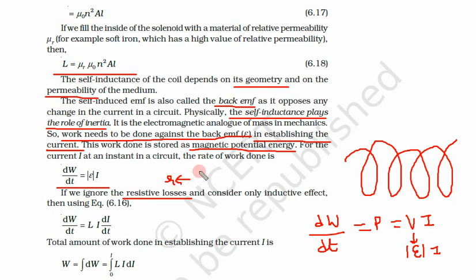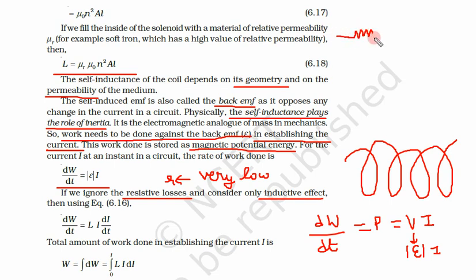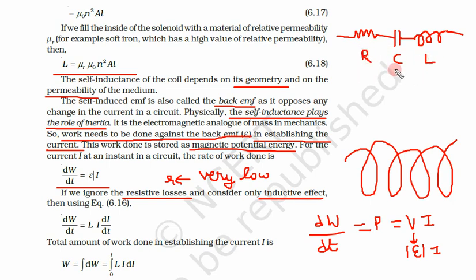Resistance R is very low, and we consider only the inductive effect. In any electrical circuit, we have three components: resistance (shown as a zigzag), capacitance (shown as a capacitor symbol), and inductance (shown as a coil). This is called the LCR circuit.